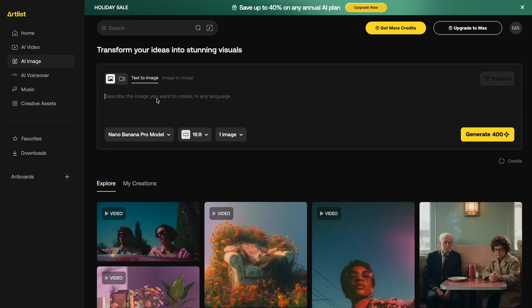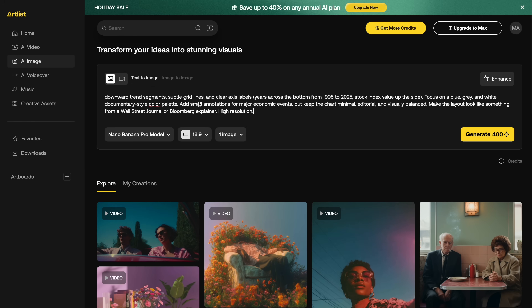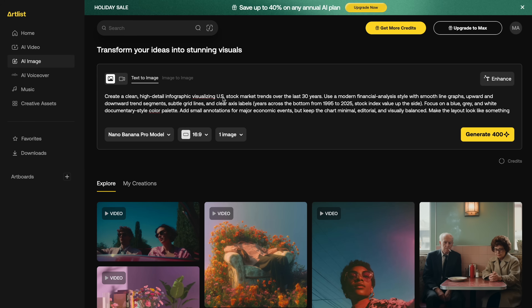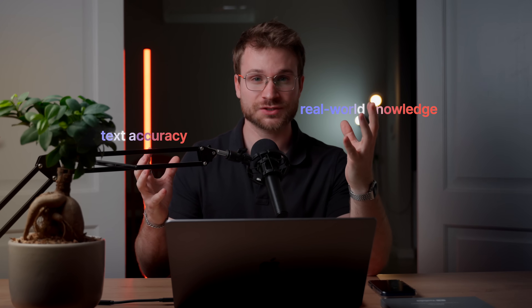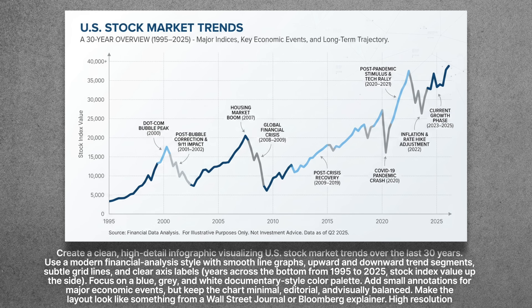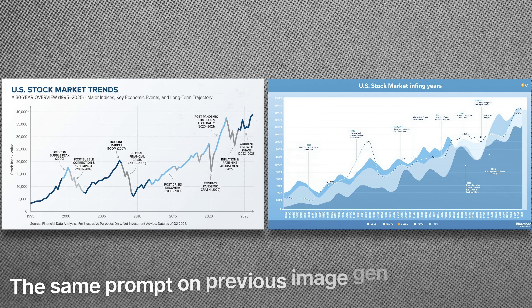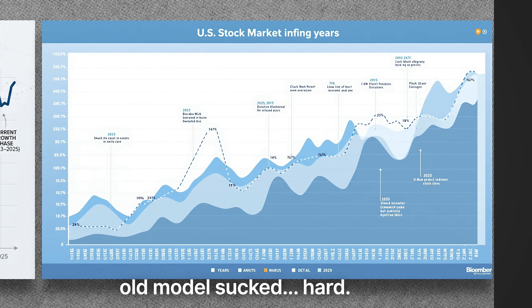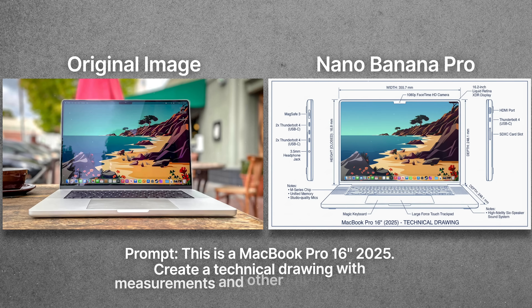Because Nano Banana Pro specializes in diagrams and infographic style detail, you can now build what would usually require After Effects without ever opening the program. Switching over to text to image, I'm going to place in my prompt for a visual trend of the US stock market over the last 30 years. Combining that world knowledge, its text rendering accuracy, and its specialty in infographics, in a couple of seconds we have the stock market trends for the last 30 years — a simple prompt, no design work needed. Or maybe I wanted a technical drawing of a MacBook Pro for a 2025 MacBook Pro review — overall it's done an all right job.